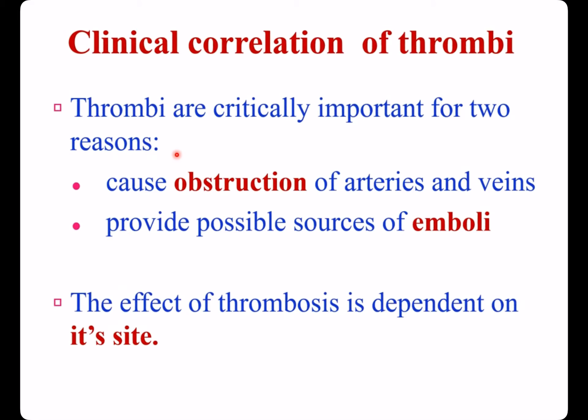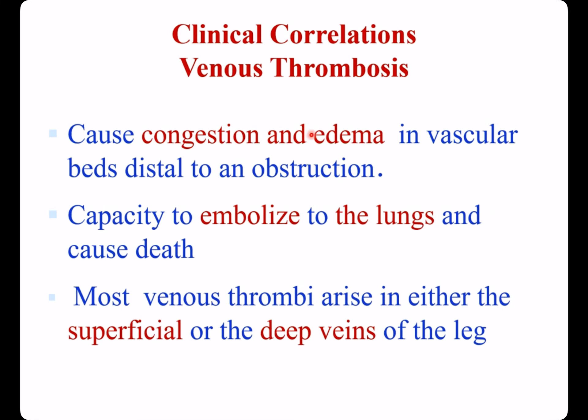Clinical correlation of thrombus. Thrombi are important for two reasons: they cause arterial or venous obstruction, and provide a possible source of emboli. The effect of thrombosis is dependent on its site. Venous thrombosis may cause congestion and edema and has the capacity to embolize to the lungs and cause death. Most venous thrombi arise in the superficial or deep veins of the leg.